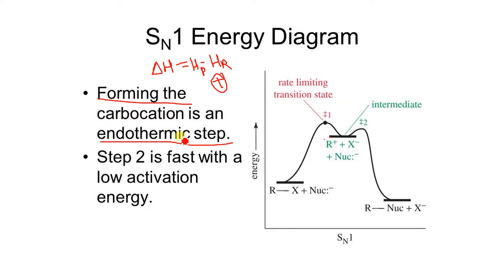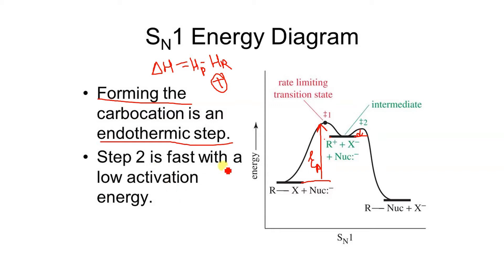Step two will be very fast with low activation energy. If we compare: step one has a higher activation energy, but step two has a much lower activation energy. Due to low activation energy, the second step is very fast. Carbocation formation is the slow step; product formation is very fast. If you see two peaks in the energy diagram, it is the SN1 energy diagram.